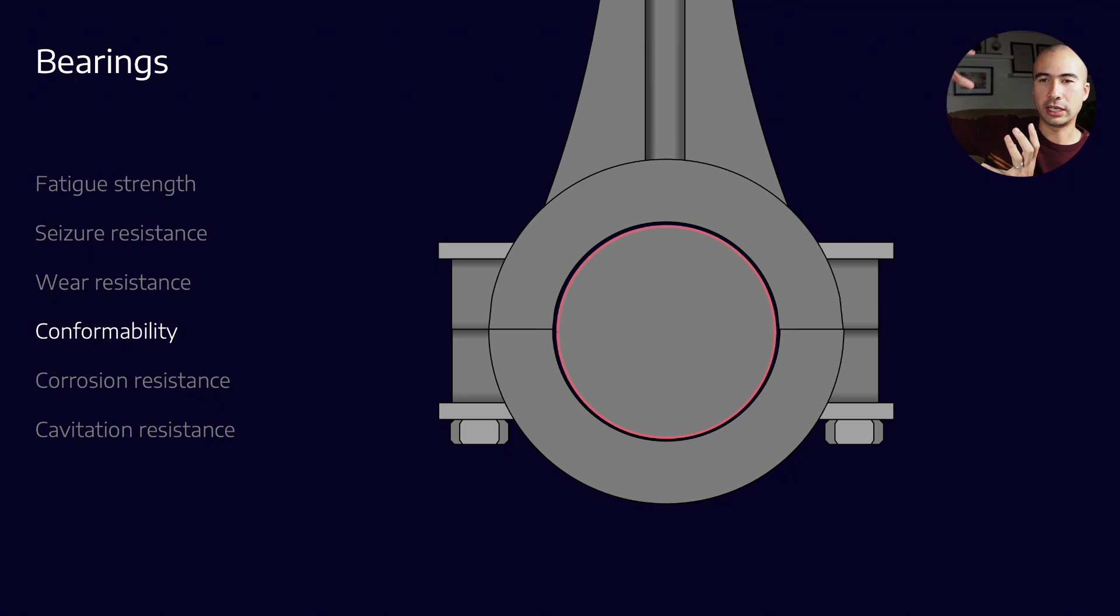That's a process called conformability. It also makes it a little bit resistant to a minor amount of misalignment, which we might desire because when we're putting engines together, sometimes we don't do it perfectly. So we want this property called conformability.